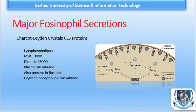This protein is not found in the granules but is apparently localized in the plasma membrane of the eosinophil. CLC is also found in basophils and mast cells. The function of this enzyme is to degrade the phospholipid membrane of the cell lining on the surface of the helminth parasite.